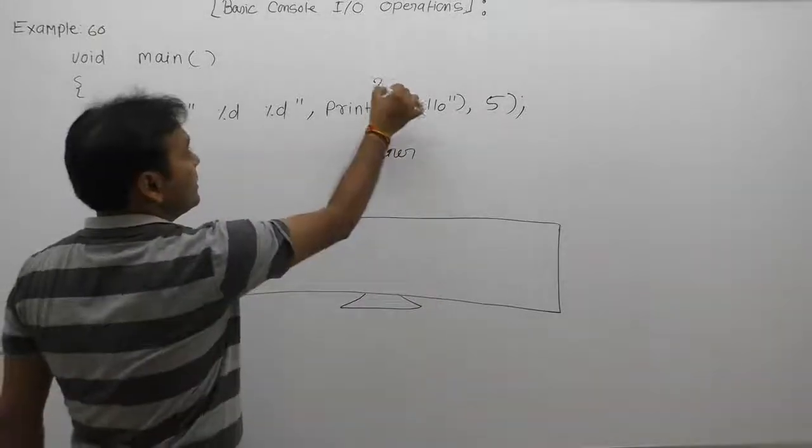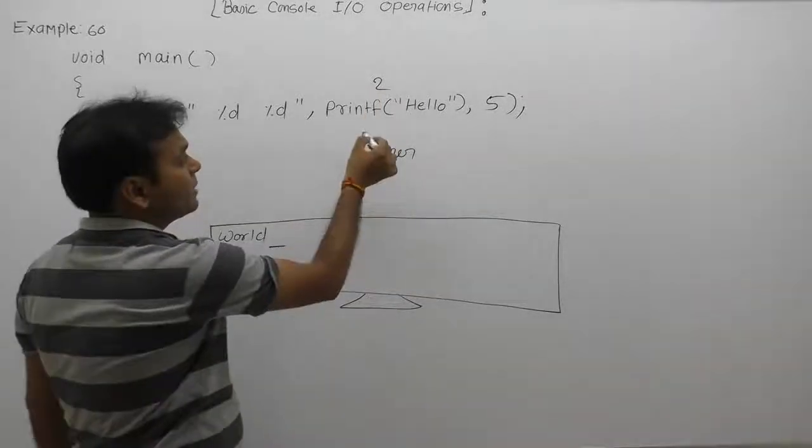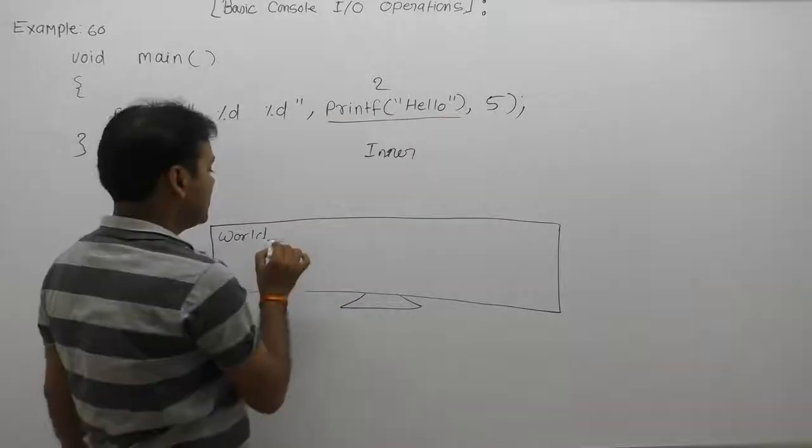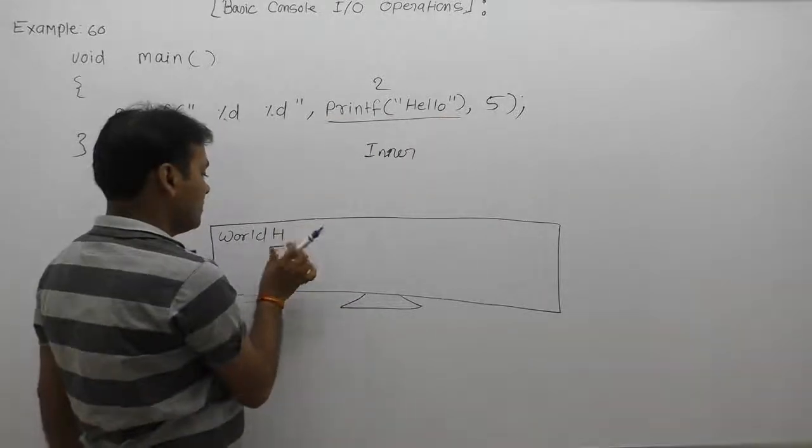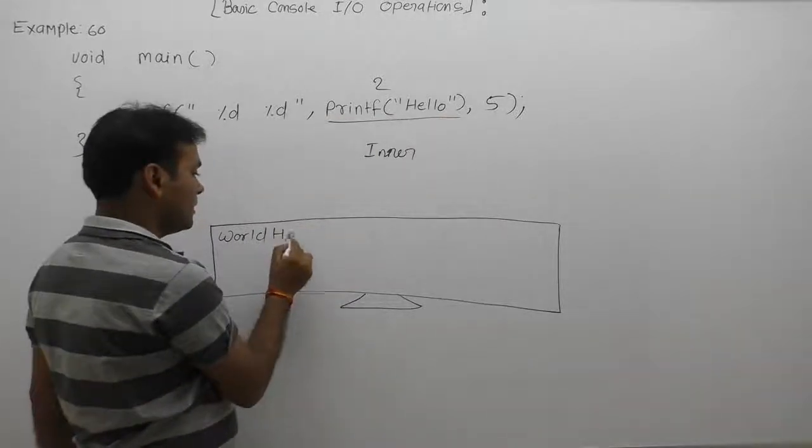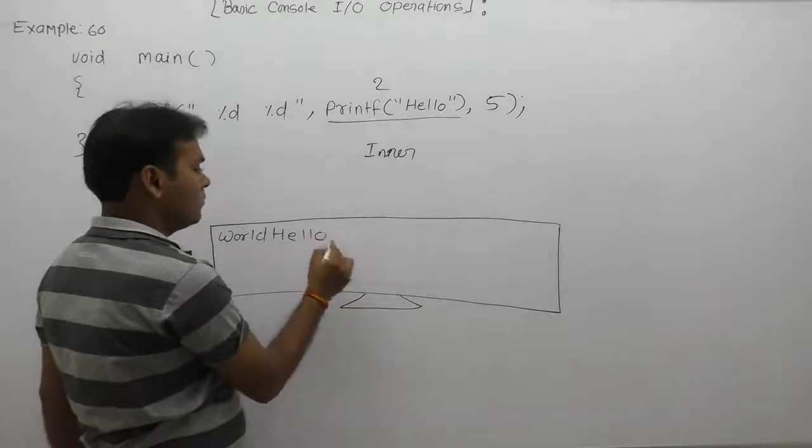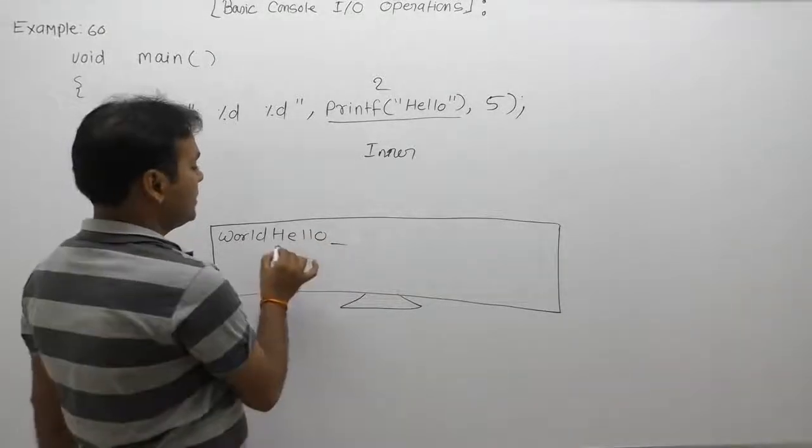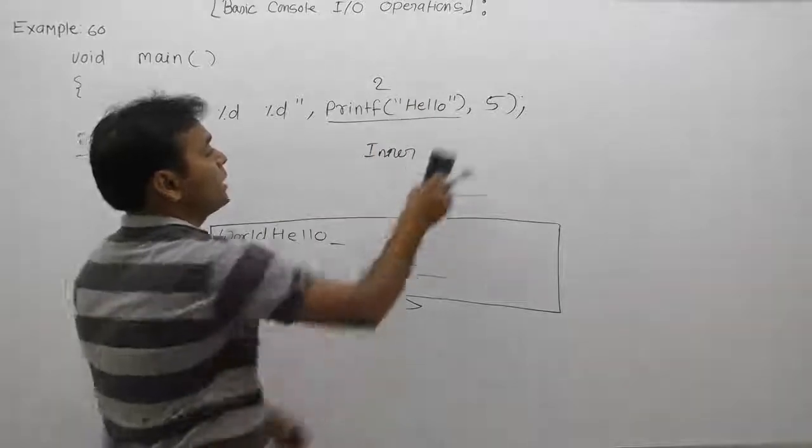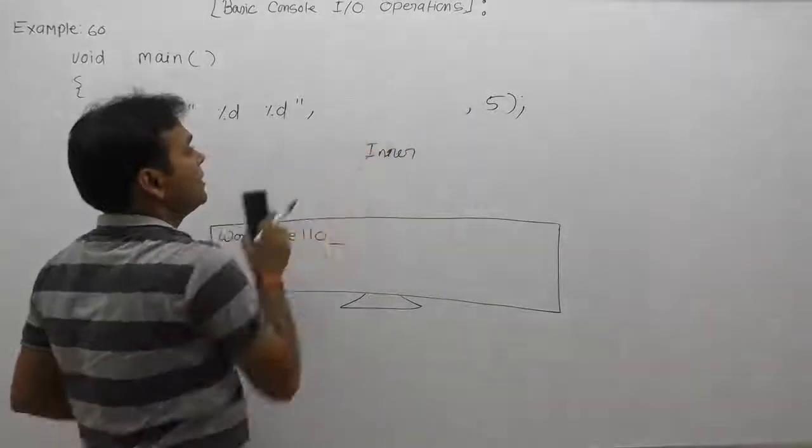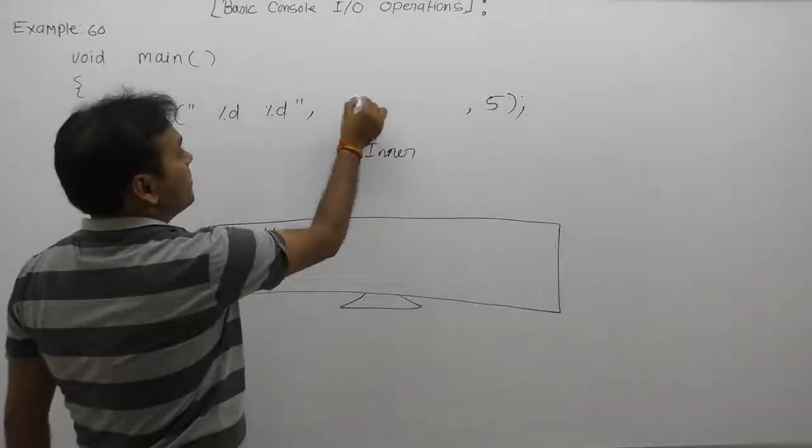Next one we are calling next printf. All reads of previous argument. Again, this printf will print message as hello on the current positions as H, E, L, L, O like that. Then again, this printf will display 5 symbols, 5 characters. Therefore, again it will return message or value as 5.